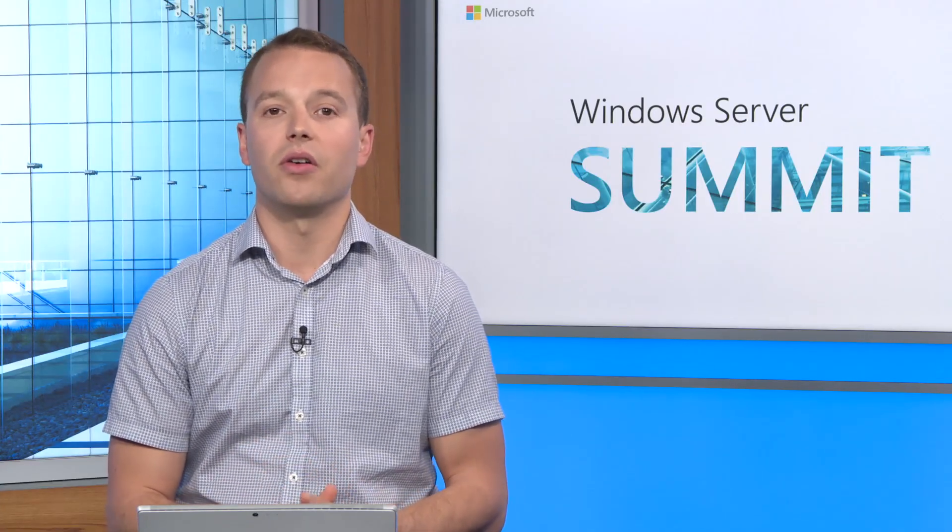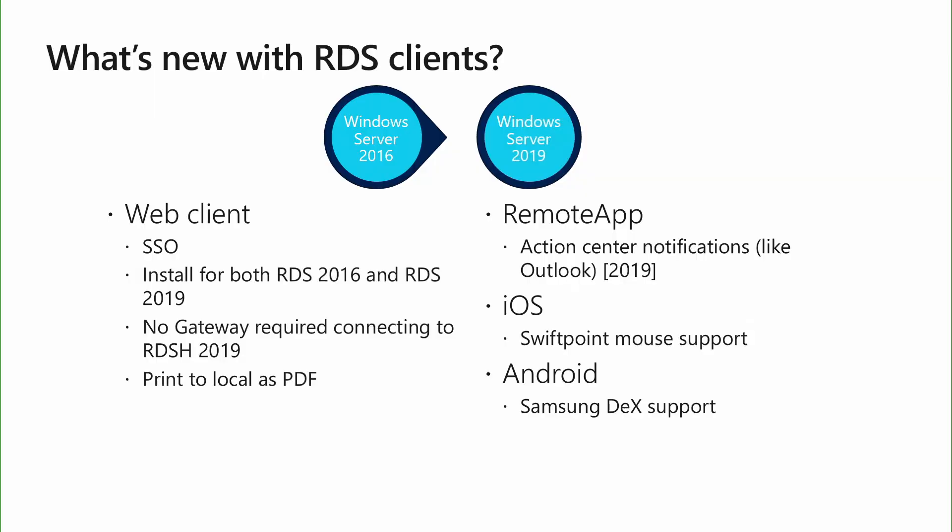We've also made it easier to manage licenses for your employees by bringing the ability for the RD licensing servers to update RDS client access licenses or CALs into AD objects without accessing Active Directory directly. We've added PerfMon or Performance Counter APIs to provide partners an easy way to access data to build monitoring dashboards and deliver a consistent user experience. We also added web client support for single sign-on to deliver a streamlined authentication experience for users connecting via the web client, which is very common today.